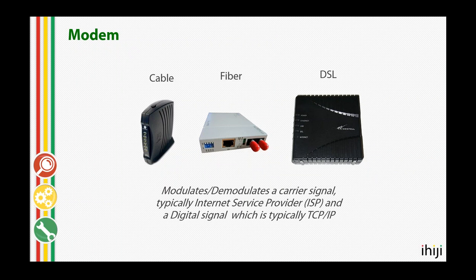Let's talk about the components of a network. First, the modem — it simply modulates and demodulates information between your carrier and your local connection. Usually there's a signal coming in on cable, twisted pair copper DSL, or fiber, and the modem converts it into a TCP/IP digital signal which your router can then translate, typically via an ethernet cable. Without the modem, you have no bridge to your ISP and no connection to the internet.